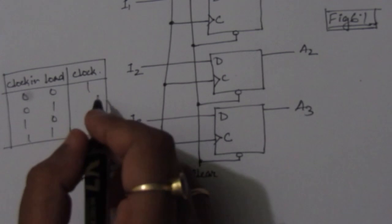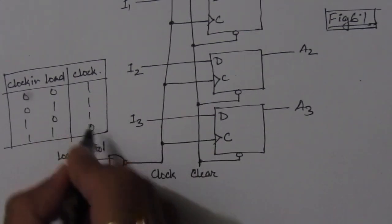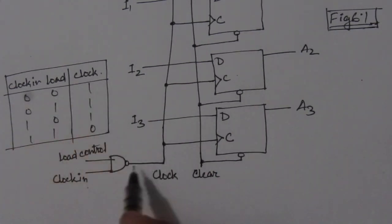Because the NAND output will be 0 only when both inputs are 1. So here we will have 1, and finally we will have here 0. So whenever we have this clock_in and this load control 0, 0, this clock will be 1. This clock will go to high state.